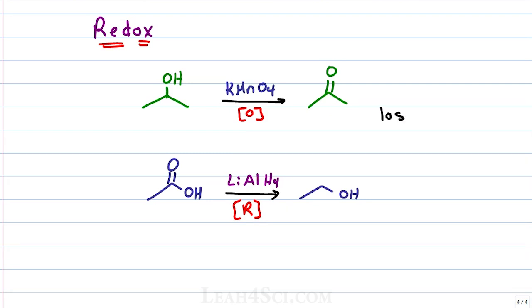If oxidation is the loss of electrons and reduction is the gain of electrons, where do the electrons come from and where do they go? Well, some other reagent in solution that we don't care about unless there is a color change when that reagent itself changes. And that's what happens in the Tollens test.